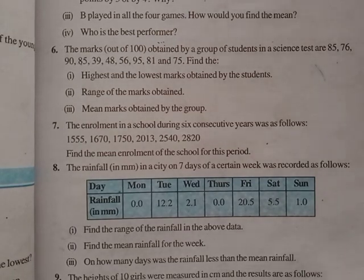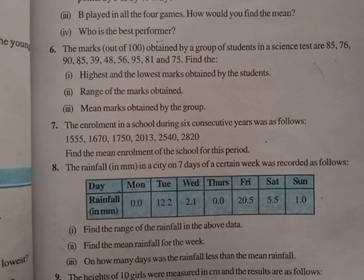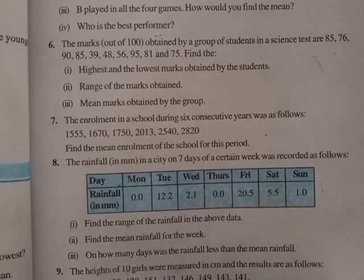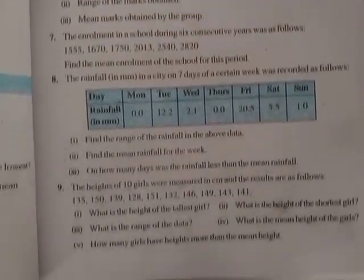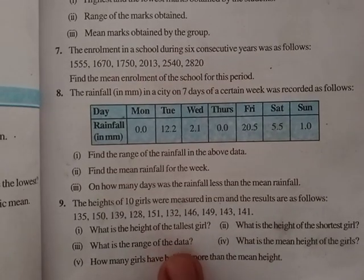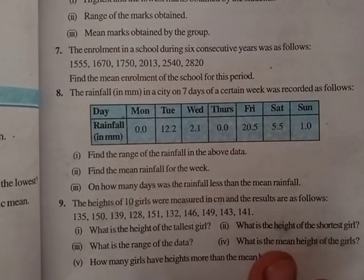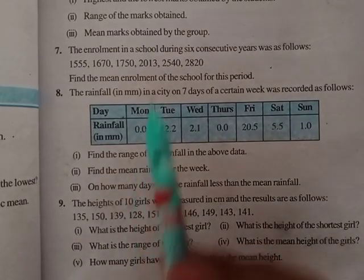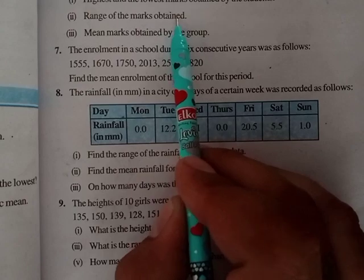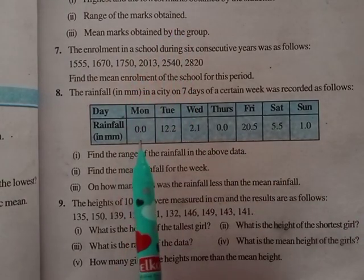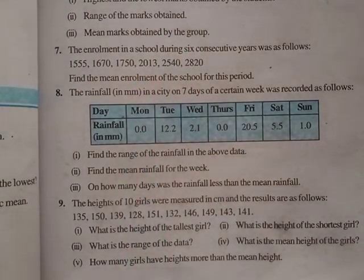Today I will explain from the 6th part. Exercise 3.1 parts 6, 7, 8, 9 — meaning 9 parts total. I will explain the 6th part, and you will work through the 7th, 8th, and 9th parts.